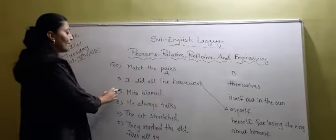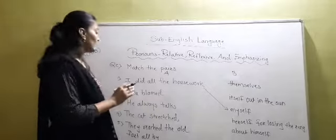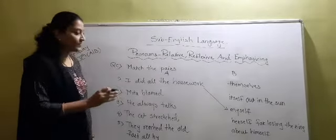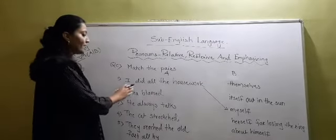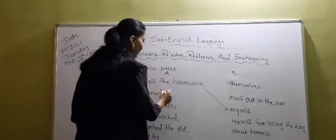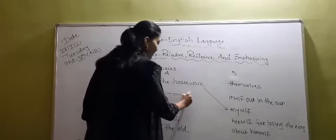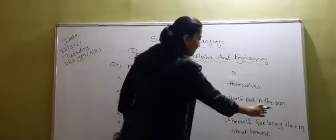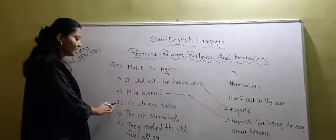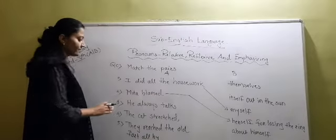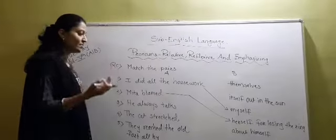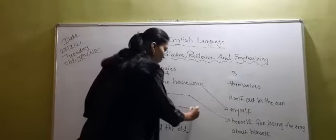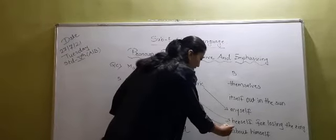Now see: Meeta blamed. Meeta is the name of a girl, so we have to use the reflexive pronoun used for a girl. Meeta blamed herself. So we match this with 'herself'. Third sentence: he always talks — we match this with 'about himself'.